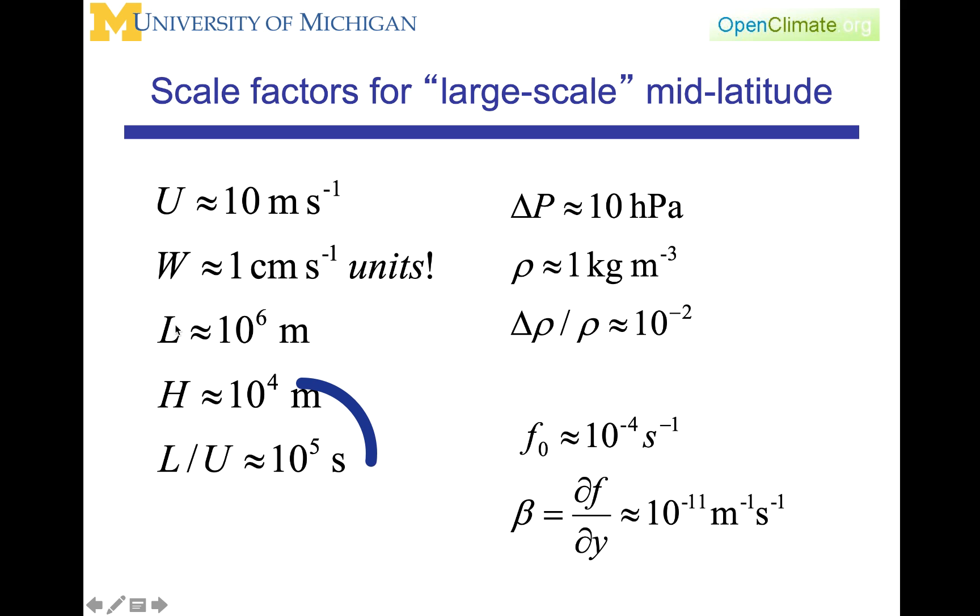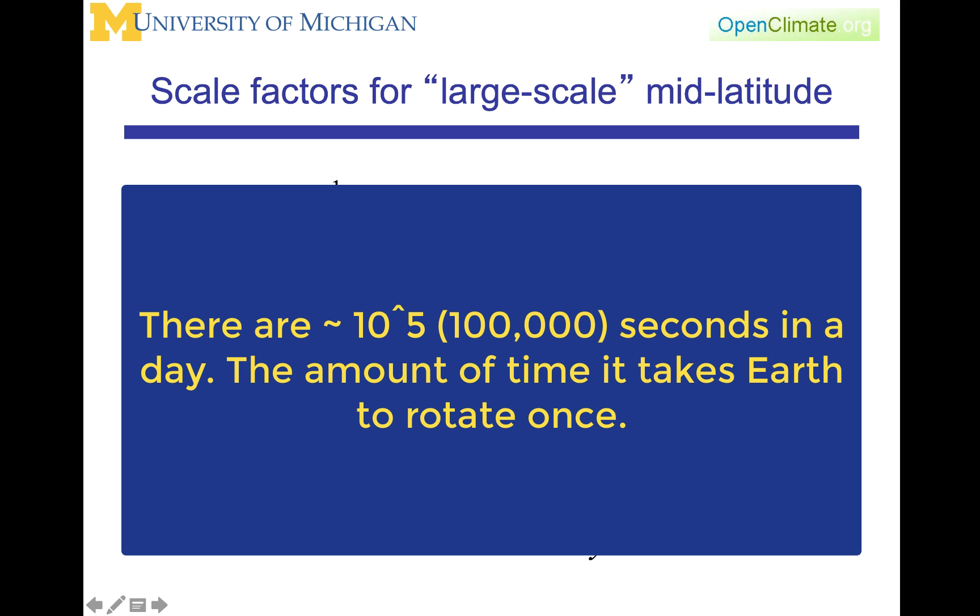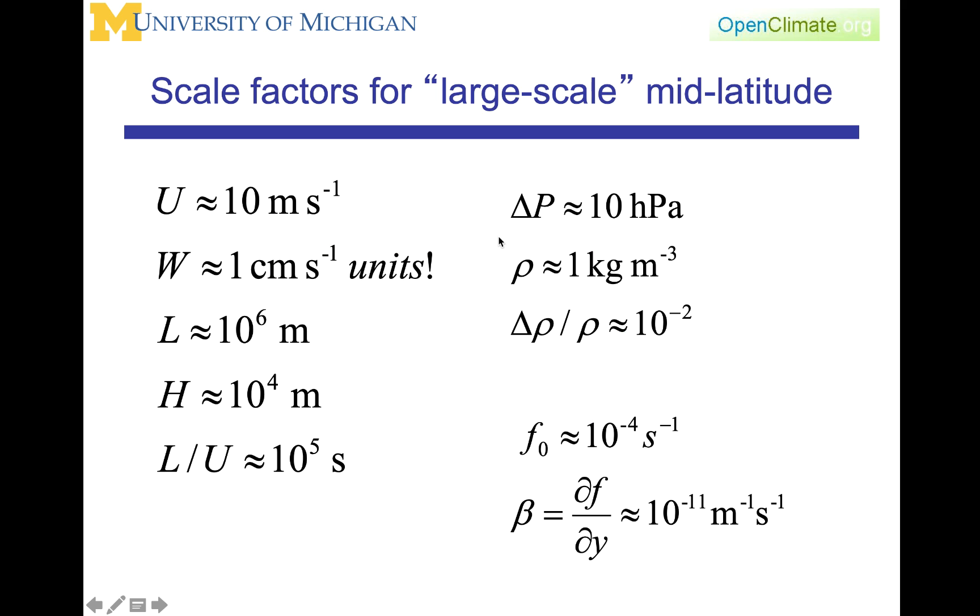L over U then gives us a timescale suitable for acceleration of 10 to the 5th seconds. Delta P, a characteristic pressure gradient, we will take to be 10 hectopascals. Rho is 1 kilogram per meter cubed. That gives us this delta P over rho as an estimate for our pressure gradient of 10 to the minus 2. F0, as revealed in the lecture on the timescale, is about 10 to the minus 4 per second, which is the value of F at 45 degrees, F being 2 omega sine of the latitude. And we will introduce,